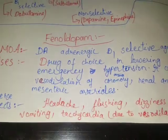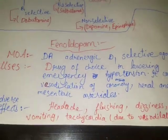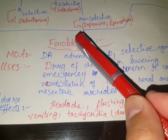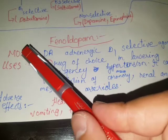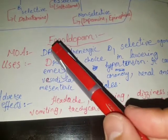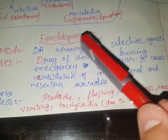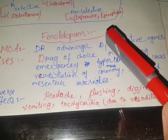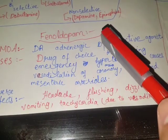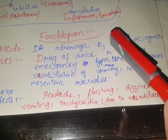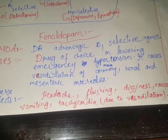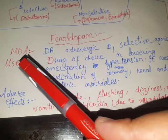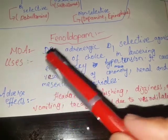Welcome to Doctors World. Our topic of discussion is fenoldopam and its mechanism of action. Fenoldopam is a directly acting adrenergic D1 selective agonist. This selectivity is towards the peripheral D1 receptors. Now let's discuss the uses of fenoldopam.